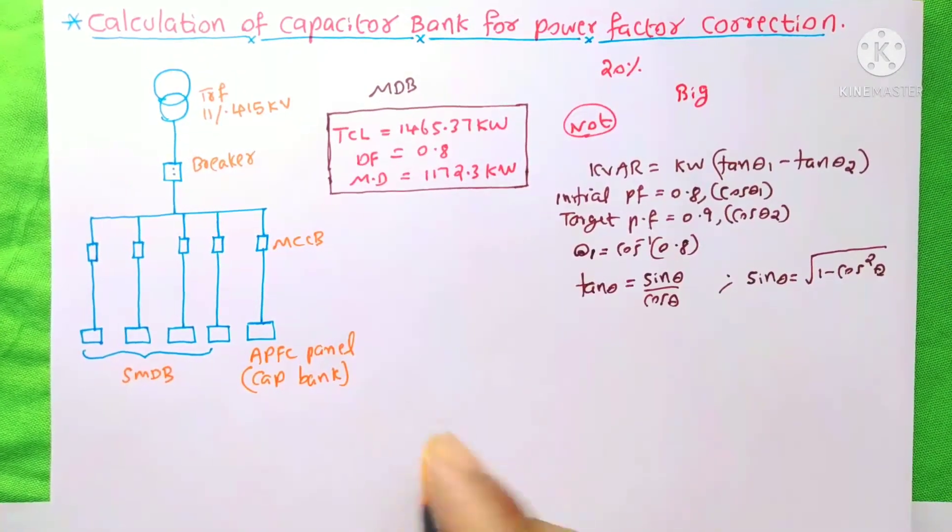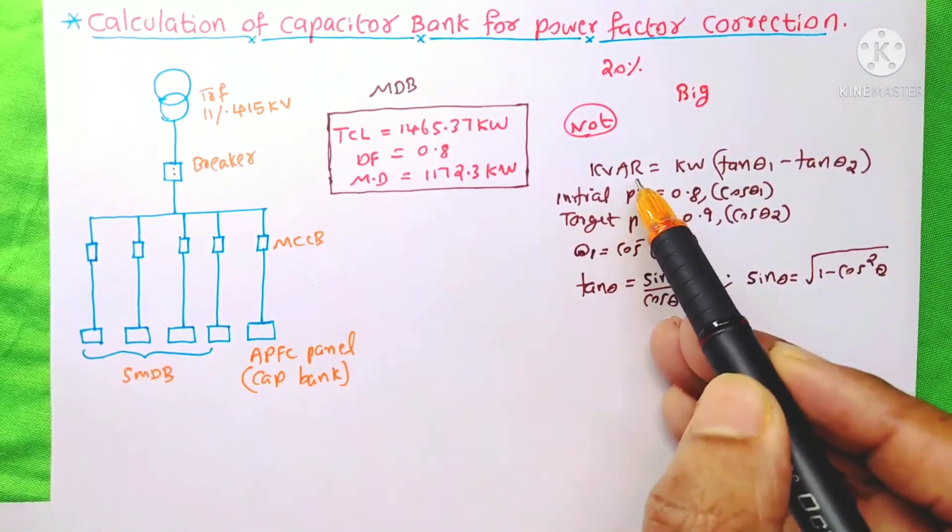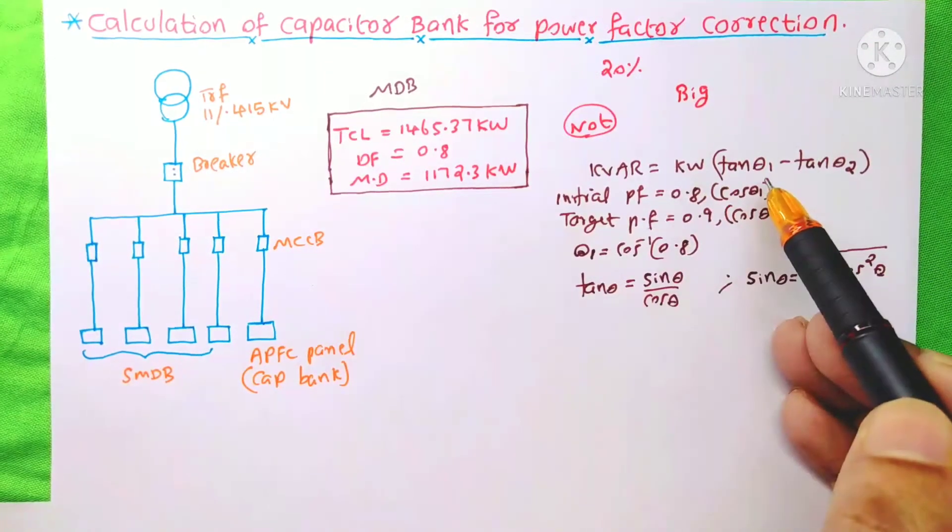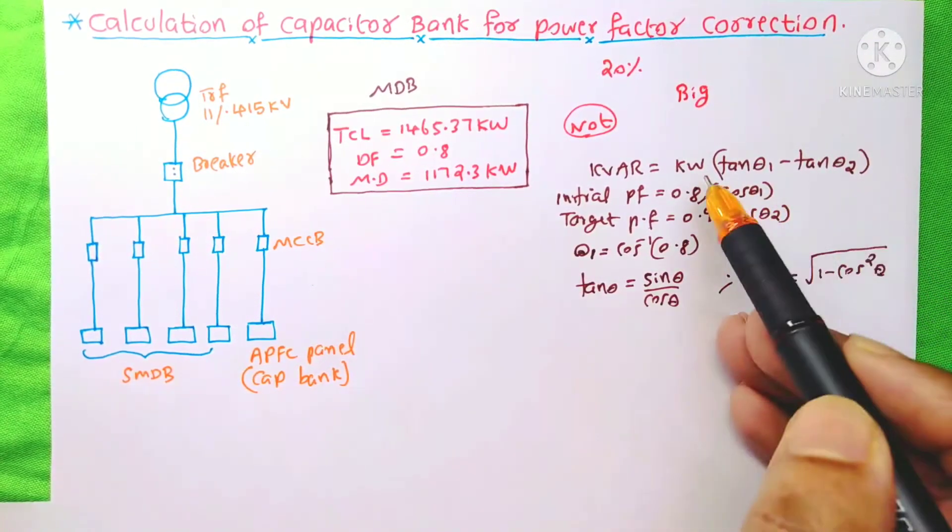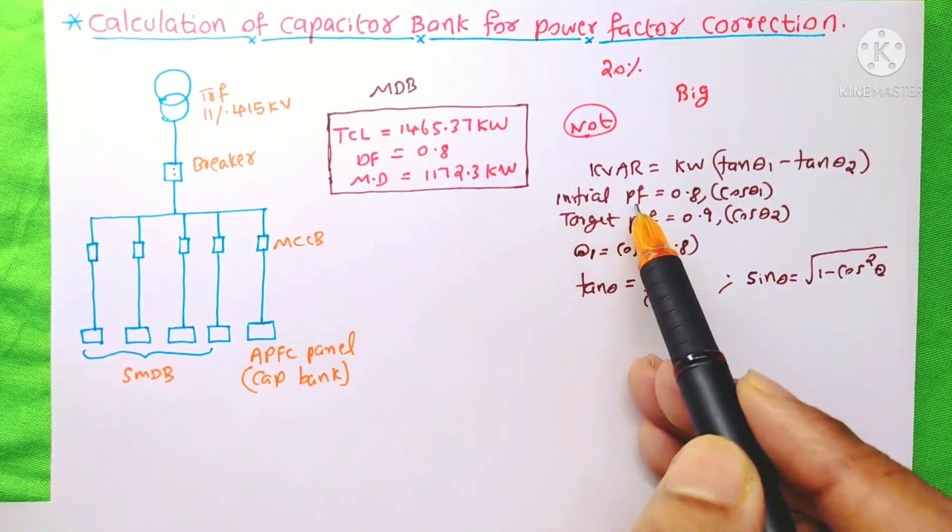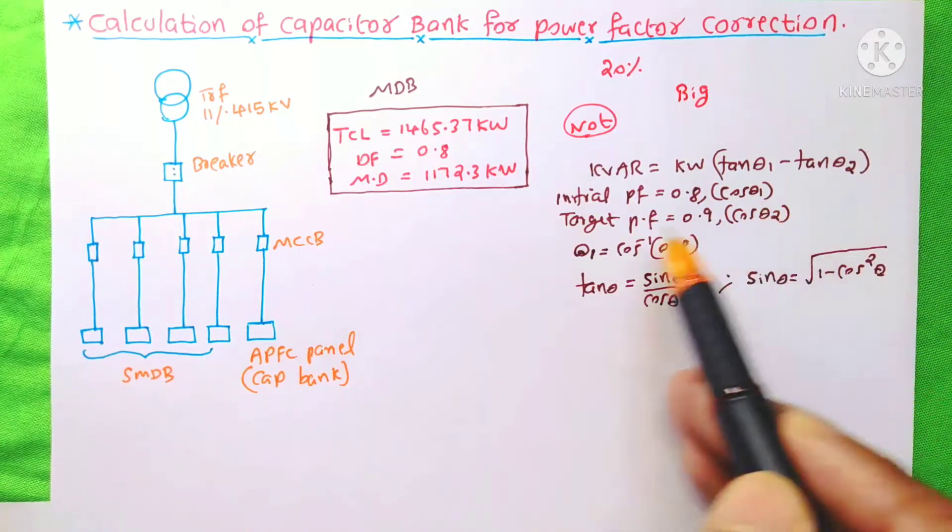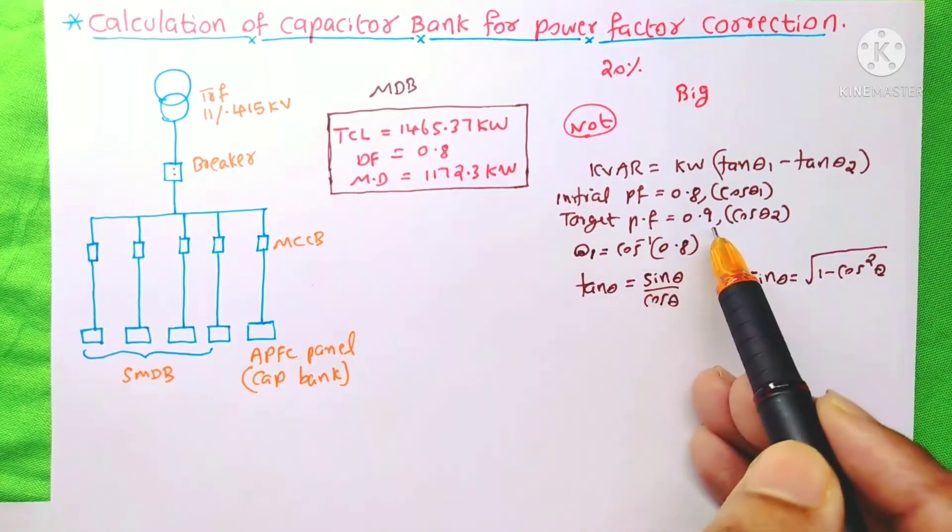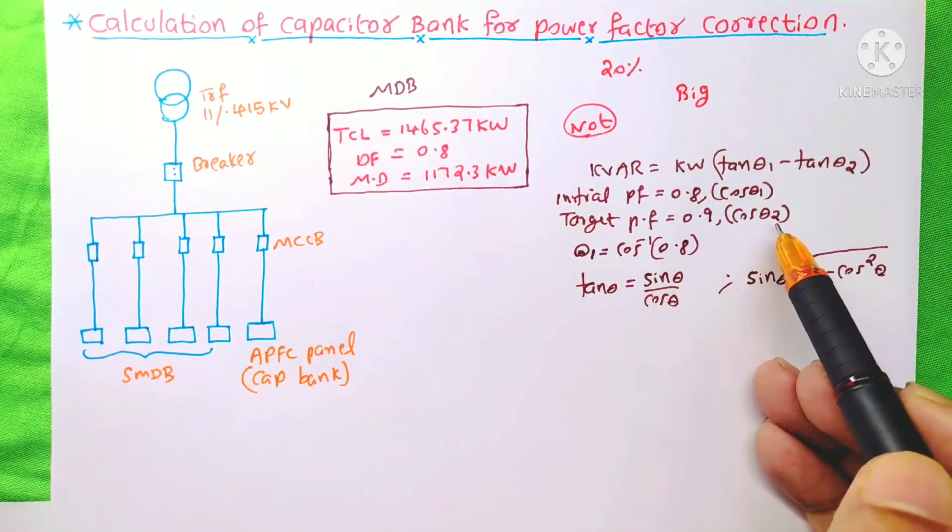And here for the capacitor bank calculation, kVAR equal to kW into tan theta1 minus tan theta2. This kW is this maximum demand. Initial power factor is 0.8 that is cos theta1 and target power factor is 0.9 that is cos theta2.